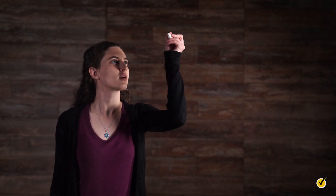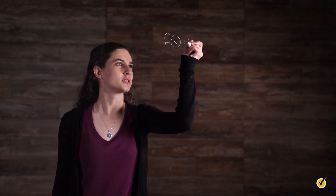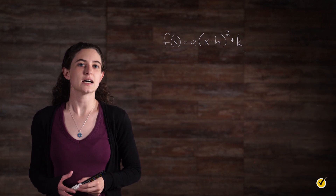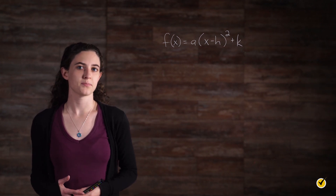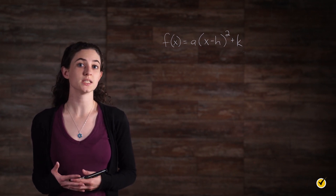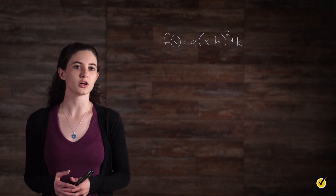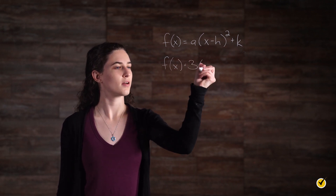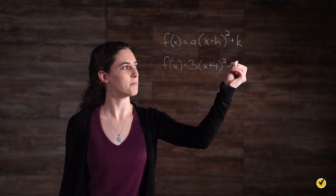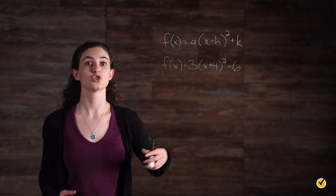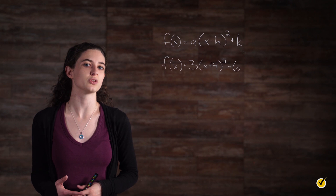When quadratic equations are in vertex form, they generally look like this: f(x) = a(x − h)² + k. As with standard form, if a is positive the function opens up; if it's negative, the function opens down. The vertex is given by the coordinates (h, k), so all we need to consider is k. For example, consider the function f(x) = 3(x + 4)² − 6. Since a is positive and the vertex is at (−4, −6), the range is all real numbers greater than or equal to −6.